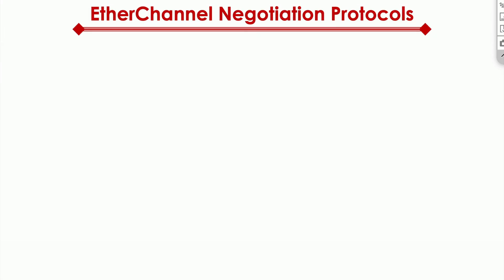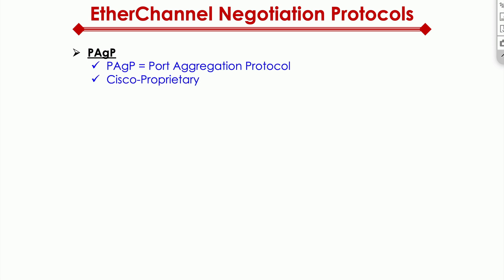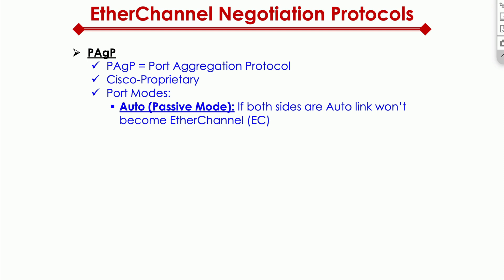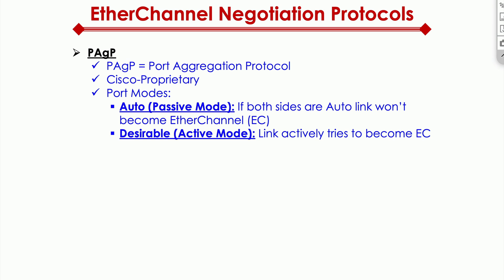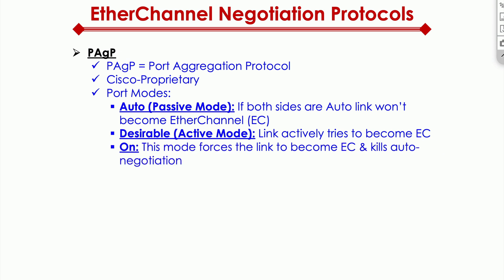Now let's quickly talk about the different EtherChannel negotiation protocols. There are two protocols. First, PAgP stands for Port Aggregation Protocol — it's Cisco proprietary. Port modes available in PAgP are: Auto, a passive mode where if both sides are set to Auto the link will never become an EtherChannel; Desirable, an active mode where the link actively tries to become an EtherChannel; and On, which forces the link to become an EtherChannel and kills auto-negotiation.